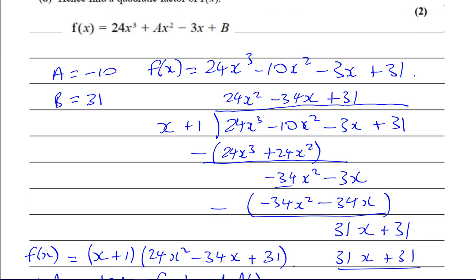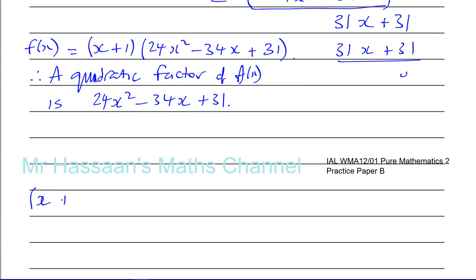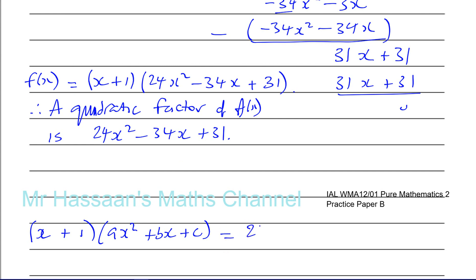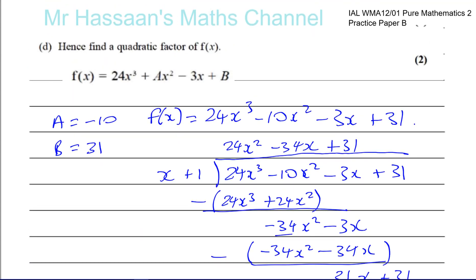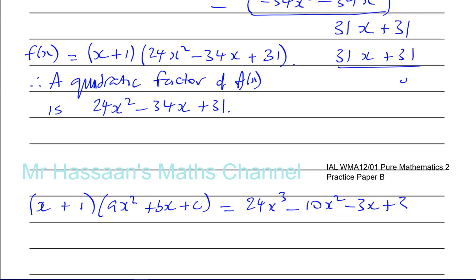There's another method called 'by recognition'. We write (x + 1)(ax² + bx + c) = 24x³ − 10x² − 3x + 31. Comparing the x³ terms: x × ax² = ax³, so a = 24. Comparing the constants: 1 × c = 31, so c = 31. These can be found quickly by inspection.